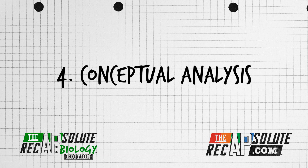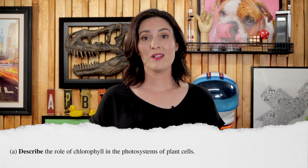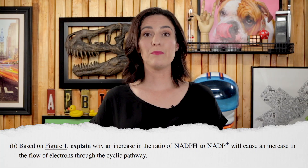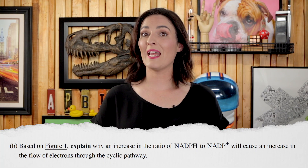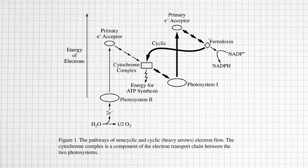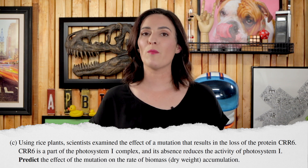Question four is conceptual analysis and the prompt provided a diagram of cyclic and non-cyclic electron flow in photosynthesis. Part A doesn't need the prompt to answer: chlorophyll absorbs energy from light, raising electrons to a higher energy level. In B, less available NADP+ means that more electrons from ferredoxin will go into the cytochrome complex of the cyclic pathway. For C and D, the rate of biomass accumulation will decrease since the mutation blocks the Calvin cycle from producing sugars, because the Calvin cycle requires both NADPH and ATP synthesized from the electron flow pathways that move through photosystem one.